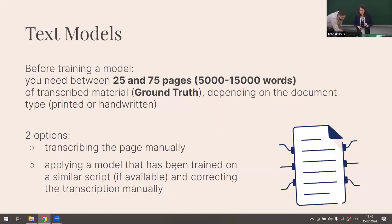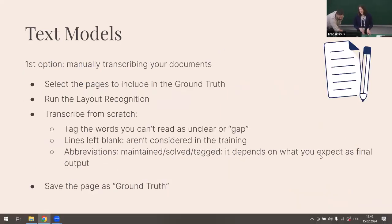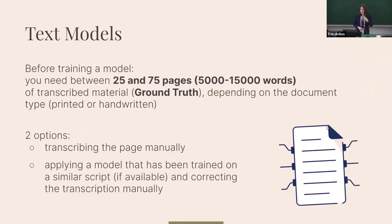For printed material you can start with fewer pages, but for handwritten material we recommend starting with around 25 to 75 pages. You then have two options to build your training data: either start completely from scratch, or apply an existing public model trained on a similar script and correct the automatic transcription.